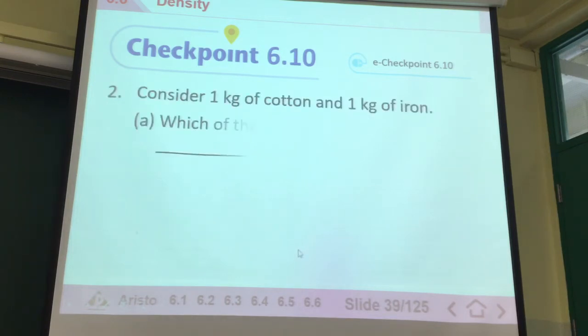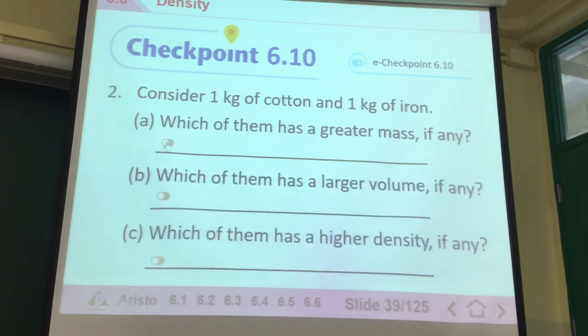If this one is divided by half in terms of volume, the mass will also be divided by half as well. That's why the density would not change. Consider 1 kg of cotton and 1 kg of iron. Which one has greater mass? They both have the same mass. 1 kg is 1 kg. It doesn't matter if it's 1 kg of cotton, 1 kg of iron, or 1 kg of water. It's all 1 kg. That's why it doesn't change.